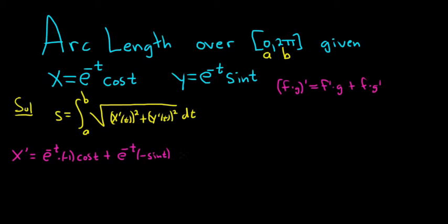Yikes, and we're going to have to square this. I'm going to rewrite this — we can pull out a negative e to the negative t. So it becomes negative e to the negative t times (cosine t + sine t). That might make squaring it a little bit easier when we actually plug it in.